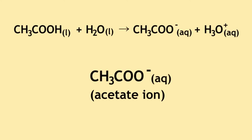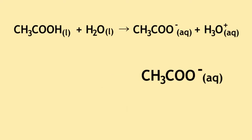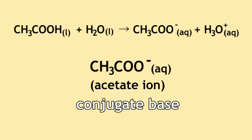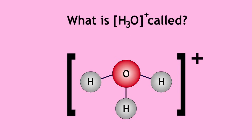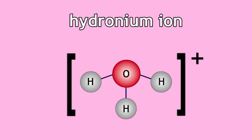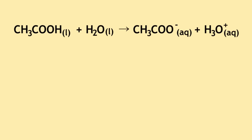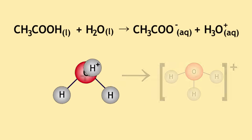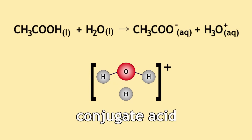The acetate ion is formed when acetic acid released a proton. The acetate ion is the conjugate base in this reaction. The hydronium ion, also known as an oxonium ion, is formed when water accepted a proton from acetic acid. This is the conjugate acid in this reaction.